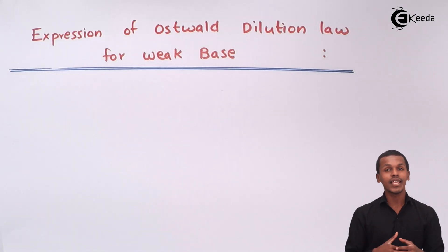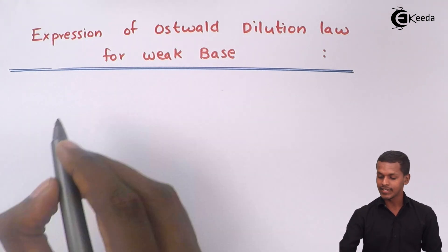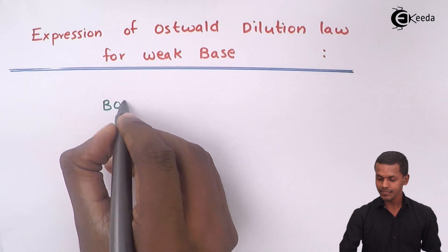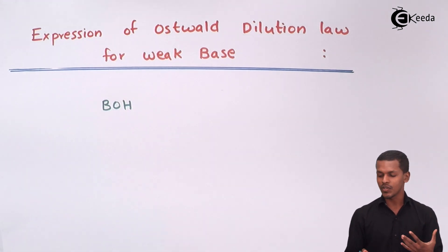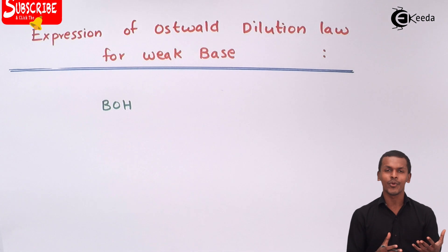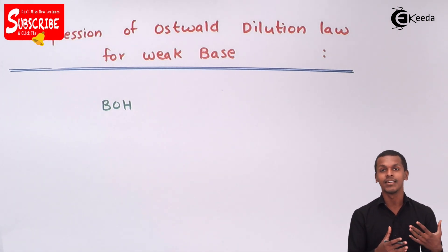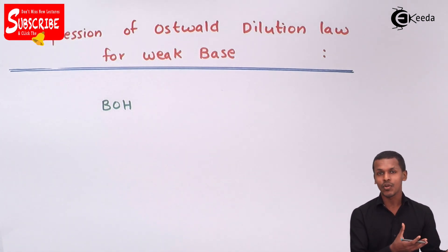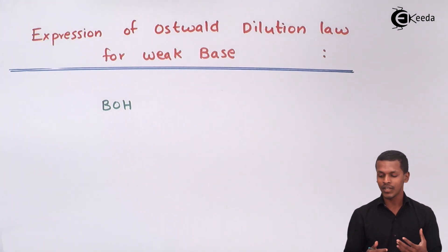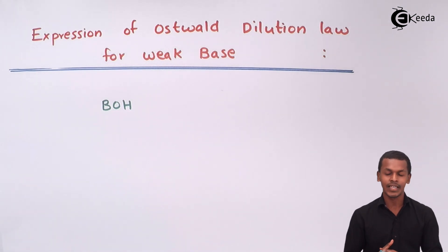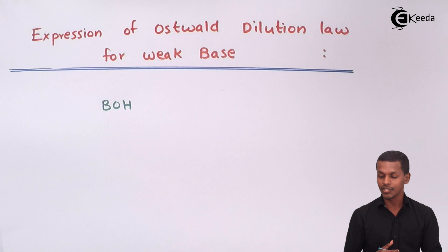For that we have to take a weak base, and I have generalized it as B-OH. B-OH is basically a base because it consists of an OH group. According to the Arrhenius concept, Lewis concept, and Lowry-Bronsted concept, this OH group is what makes it a base, and that is the reason I have generalized this compound as basic in nature.